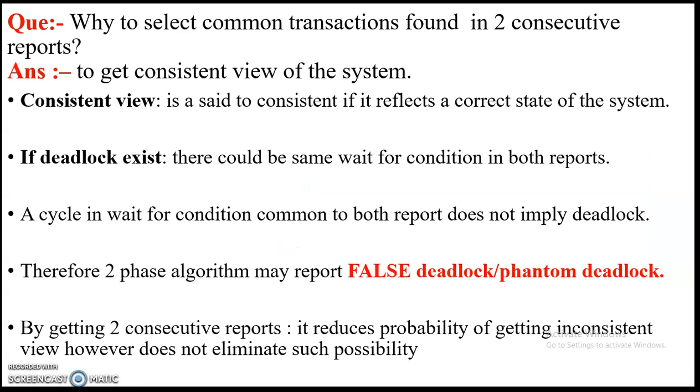Why is there need of two consecutive reports? The answer is to get the consistent view of the system. Consistent view is said to be consistent if it reflects a correct state of the system. If deadlock exists, there could be same wait-for condition in both reports. A cycle in wait-for condition common to both reports does not imply deadlock. Therefore two-phase algorithm may report false deadlock or phantom deadlock. By getting two consecutive reports, it reduces the probability of getting inconsistent view, however does not eliminate such possibility.